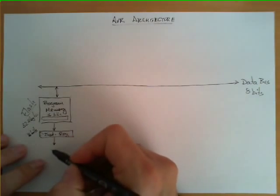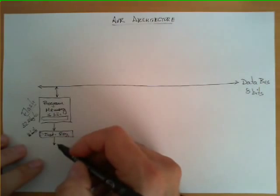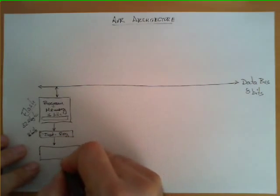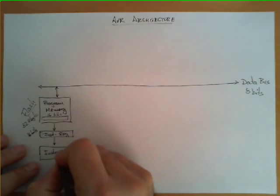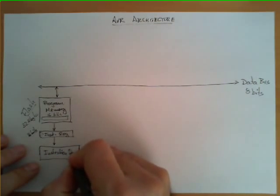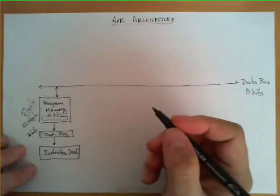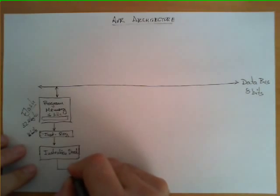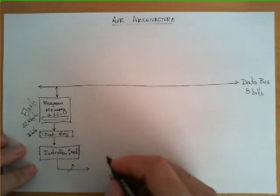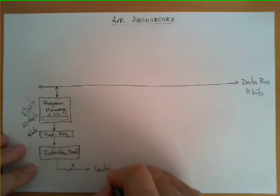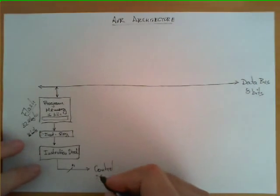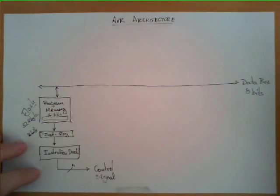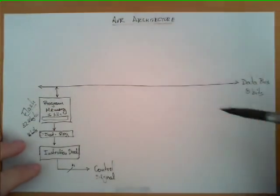One of the most important tasks that the microcontroller has to do with this instruction is to decode it. This information enters another block which we call the instruction decoder. This instruction decoder is going to provide numerous — let's denote it as N — numerous control signals that will be distributed all along the architecture, controlling the different blocks.